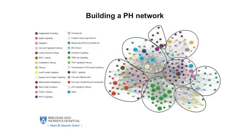We then used this PH network as a platform coupled with a well-validated microRNA target prediction algorithm called TargetScan in order to identify those microRNAs that have the broadest influence throughout the entire PH network. To do so, we ranked microRNAs based not only on the number of predicted targets they had within the network, but also how well distributed those targets were throughout the network itself. Based on this metric, we predicted the microRNA 130 and 301 family to be the most influential set of microRNAs in the context of PH. This is a family of four microRNAs that share the same seed sequence and thus presumably regulate the same broad cohort of PH-relevant target genes.